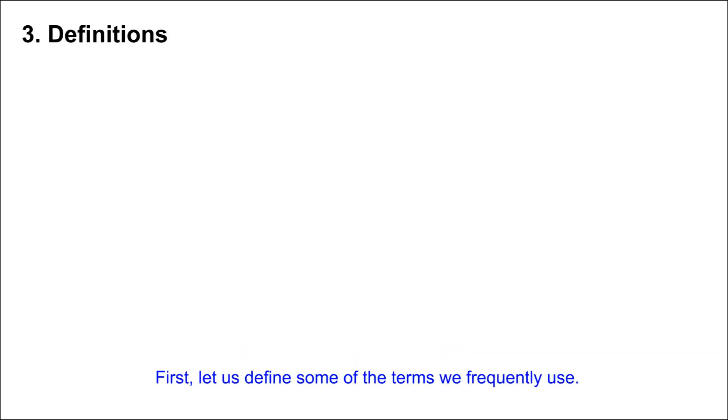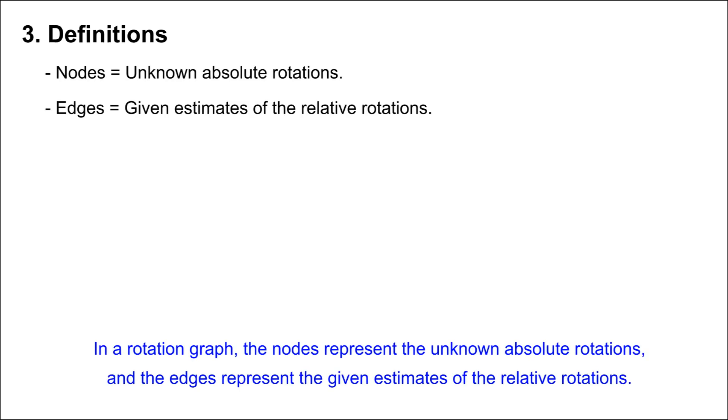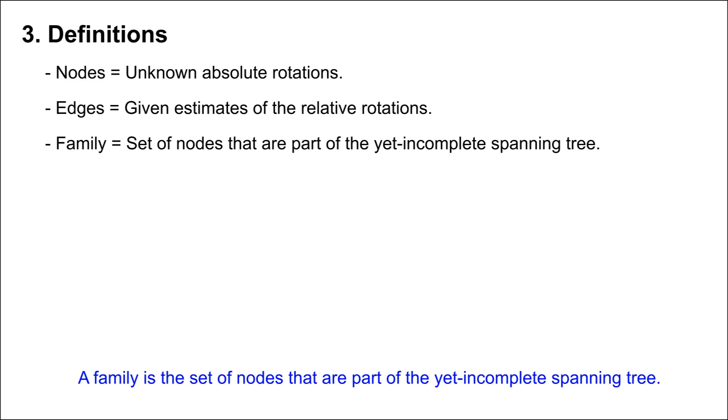First, let us define some of the terms we frequently use. In a rotation graph, the nodes represent the unknown absolute rotations, and the edges represent the given estimates of the relative rotations. A family is the set of nodes that are part of the yet incomplete spanning tree.